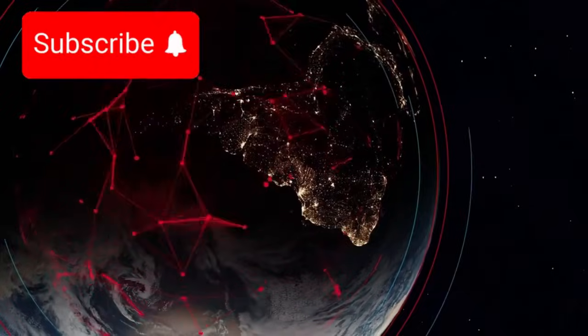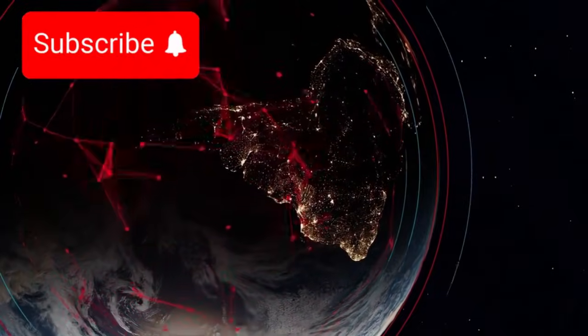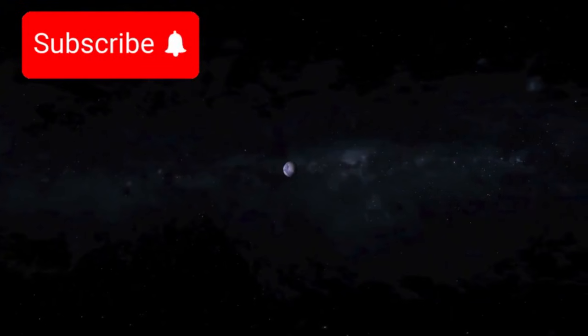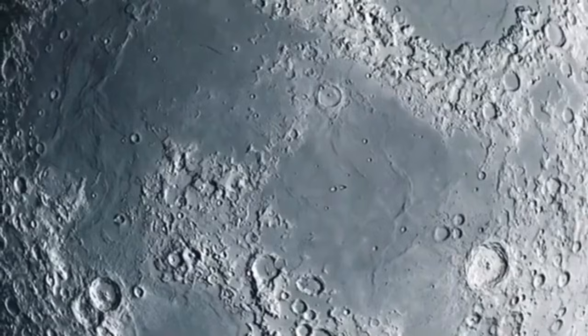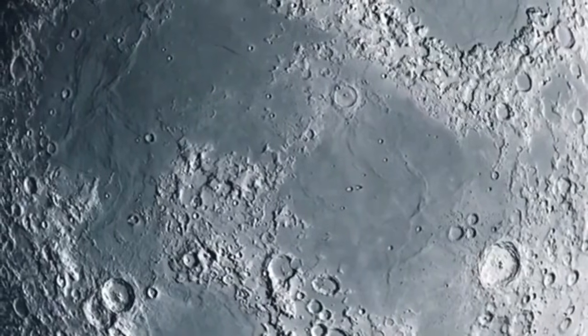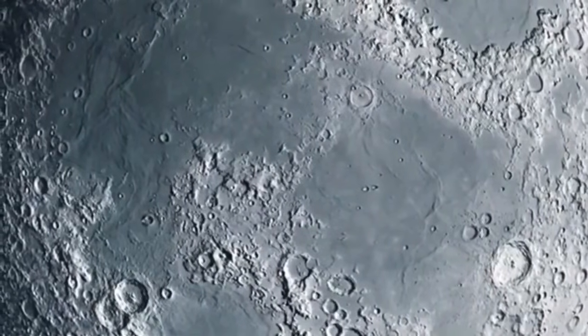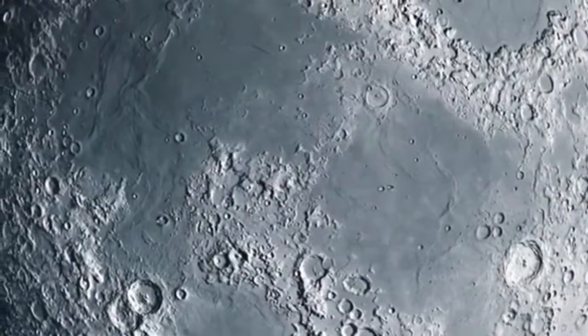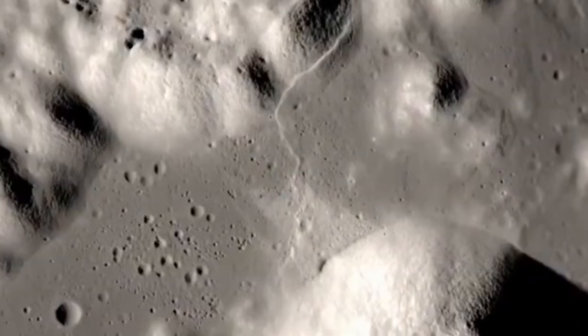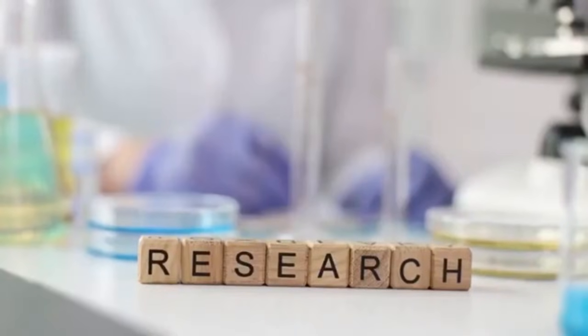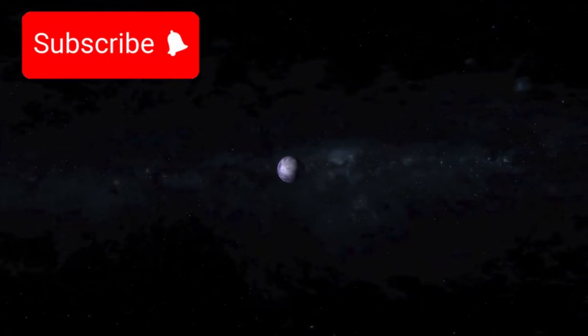Looking toward the future, these discoveries about Pluto are inspiring new missions and research programs. Some scientists are already proposing more detailed studies of the outer solar system, possibly including new spacecraft missions that could visit multiple dwarf planets and compare their atmosphere properties. Others are using Webb's Pluto data to refine their search strategies for finding similar atmosphere phenomena around planets orbiting other stars.